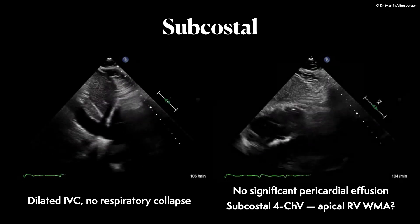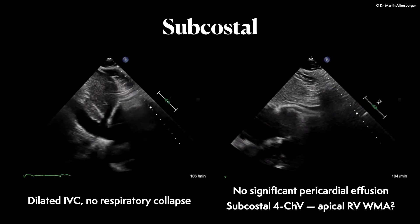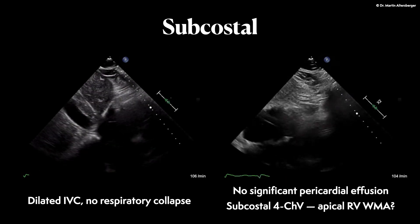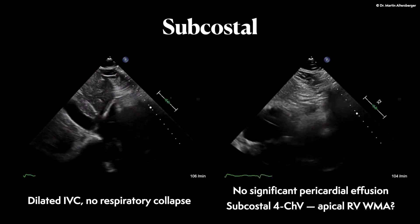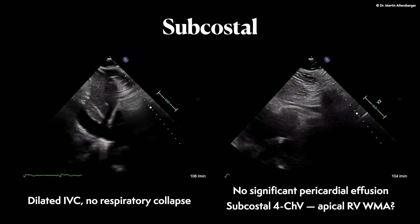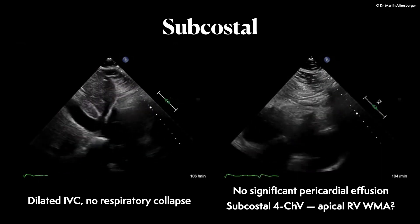Furthermore, it is very hard to differentiate whether there are wall motion abnormalities of the right ventricle as well, because we do not see the entirety of the right ventricular free wall.